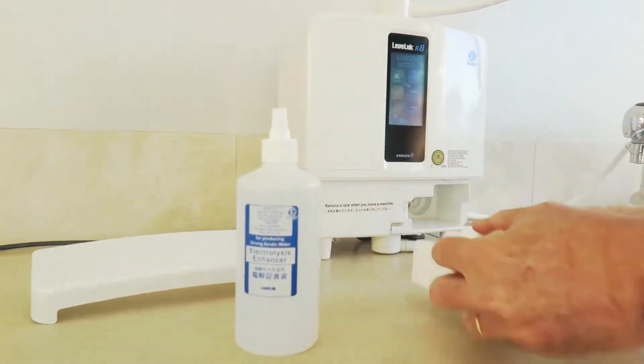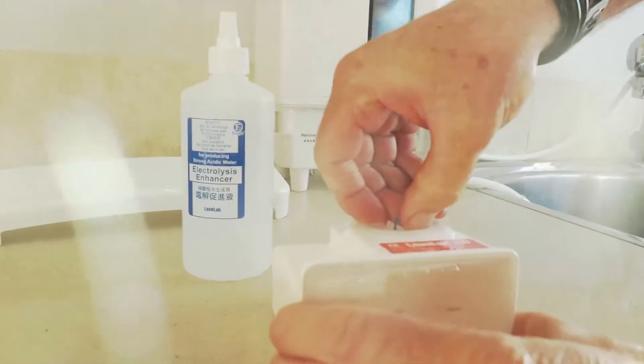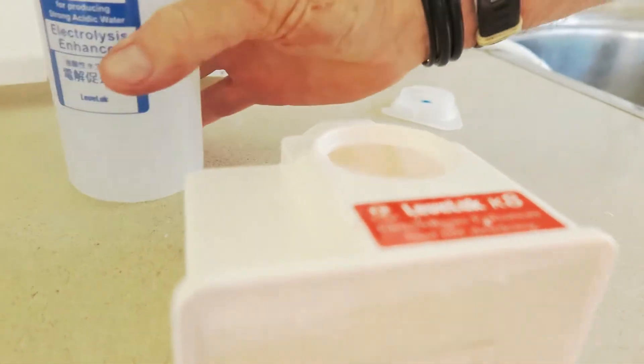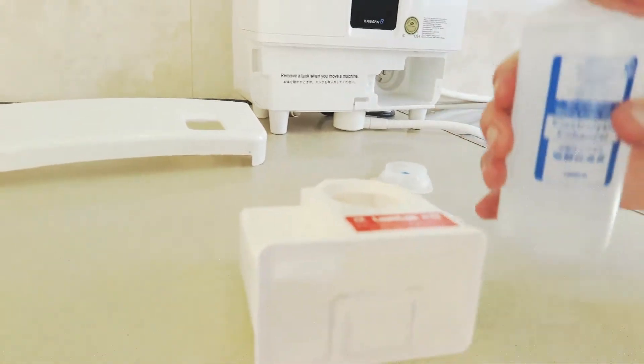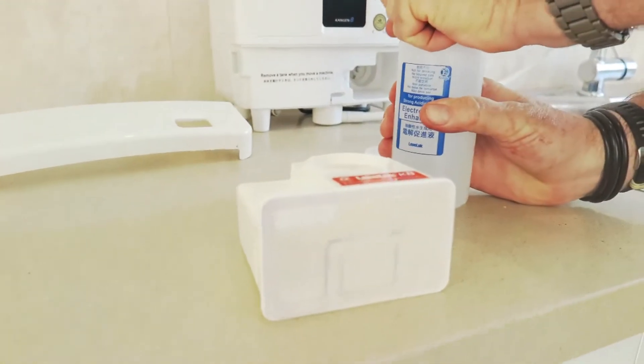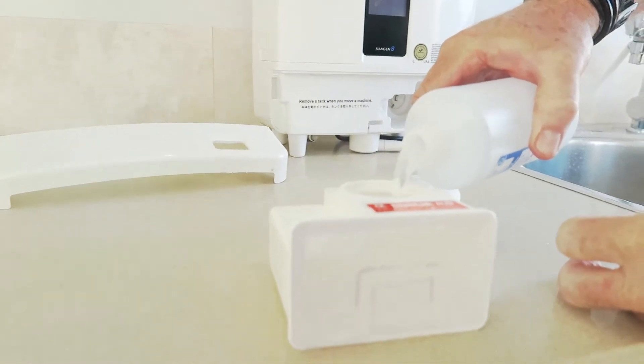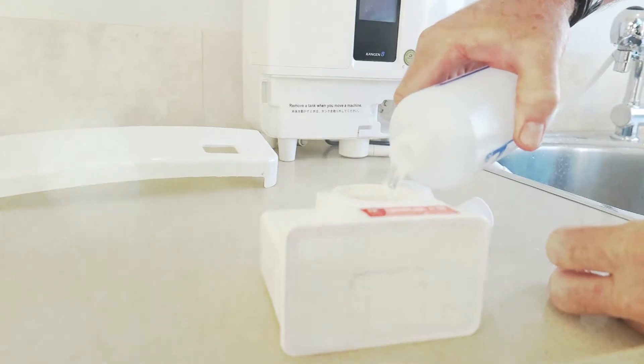Then slowly pull out the tank and open the lid. Once the lid's off, place the electrolysis enhancer into the tank. Because it is quite expensive, you don't want to waste it. Once it's full, put the lid on.